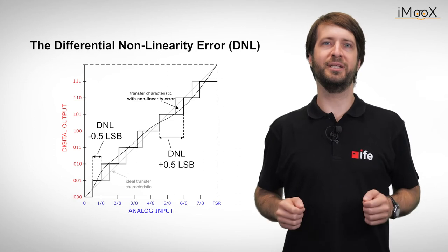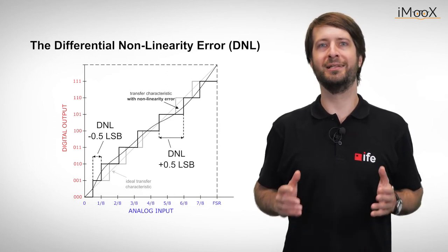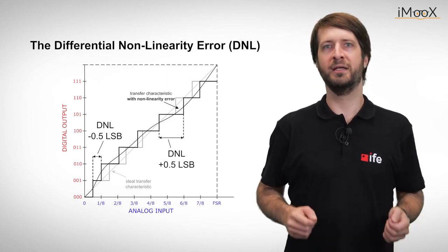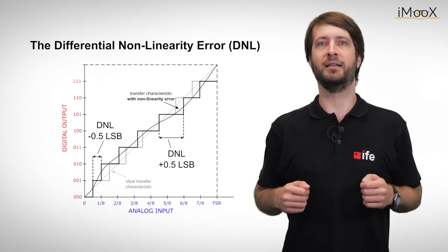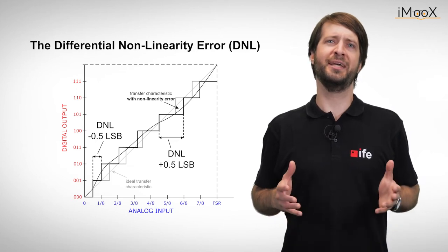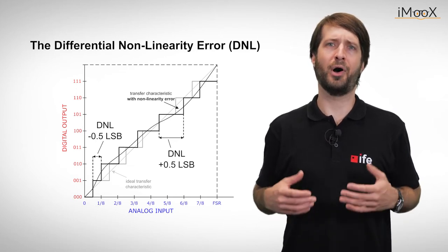This error will dominate in applications where we close a control loop. In this case, the loop will remove the INL. A large DNL, on the other hand, could cause hidden zones of instability for our loop. Just think about what happens when the differential non-linearity error becomes greater than one LSB.